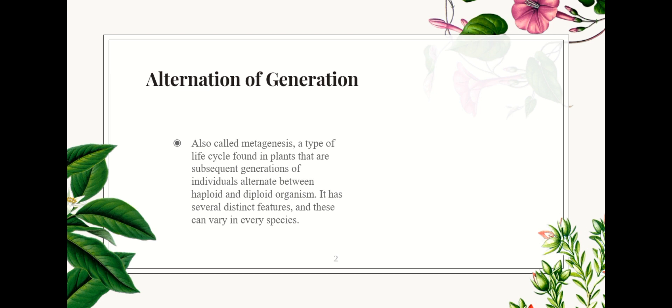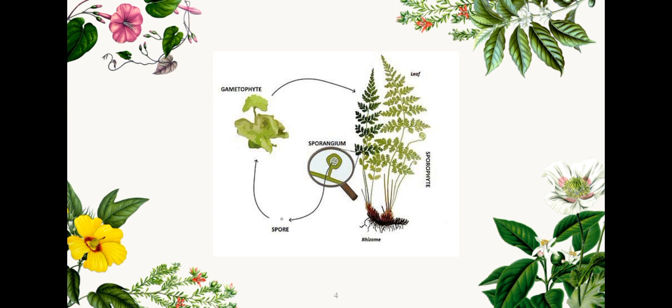Plants' means of reproduction includes alternation of generations. It is also called metagenesis, a type of life cycle found in plants where subsequent generations of individuals alternate between haploid and diploid organisms. It has several distinct features and this can vary in every species. The alternation of generations life cycle includes the sporophyte, which at maturity produces organs known as sporangia — specialized reproductive organs that produce haploid spores. These cells are released into the air or water and carried away. When they reach a suitable environment, they begin the process of developing into a gametophyte.